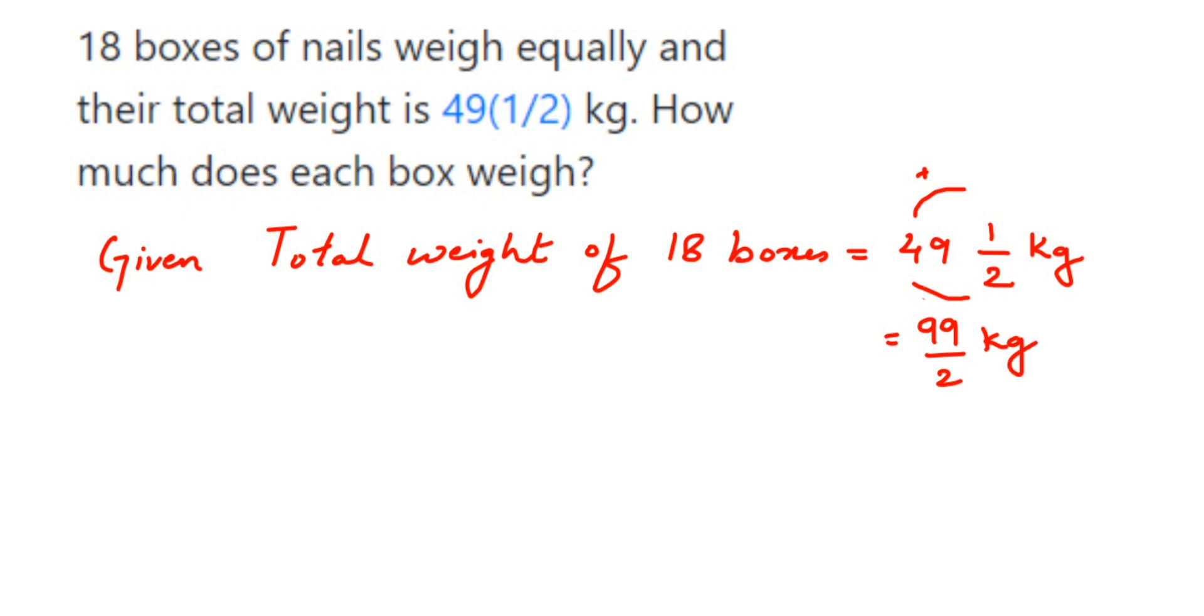So total weight is 99/2 kg. Now how many boxes are there? 18 boxes are there. So this 99/2 kg we have to divide by 18, because we have to find out the weight of each box. So weight of each box, or one box, will be 99/2 divided by 18. Now you're dividing two fractions, right? 18 can be written as 18/1.